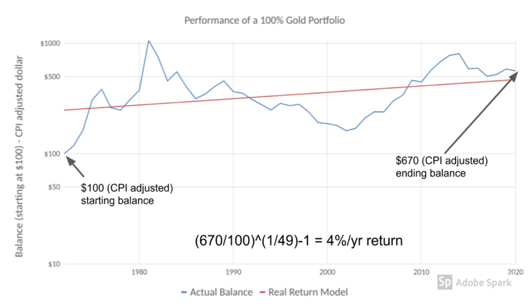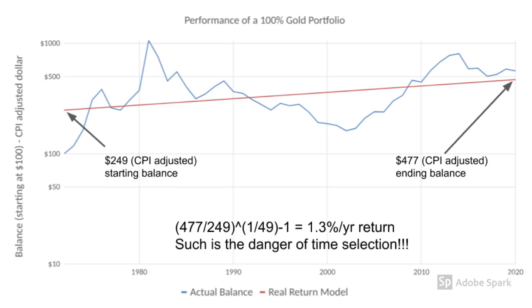I put the equation down below for anyone else who doesn't have a financial calculator. So this 4% is obviously a nice real rate of return, but one could easily argue, 'Hey, you picked 1971 deliberately to make gold look good.' Rather than just use the endpoints, let's regress all the data from start to finish. If we use a logarithmic plot as I did here, the slope of the line represents the rate of growth. Notice that the line representing the regression starts at a much higher level than the actual start point in 1971.